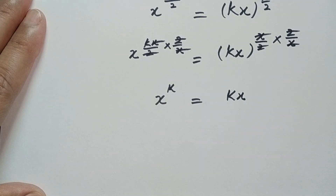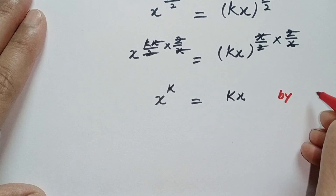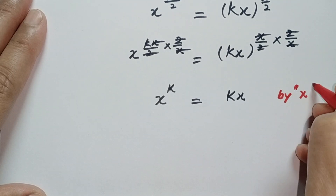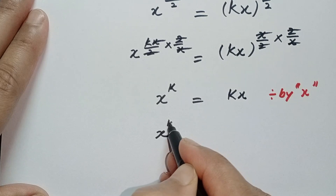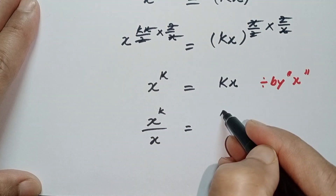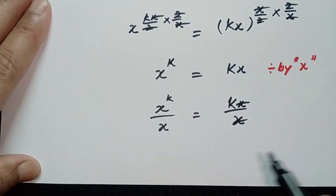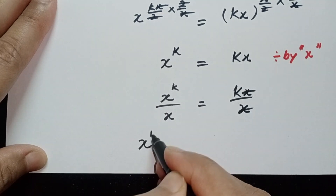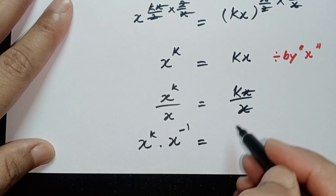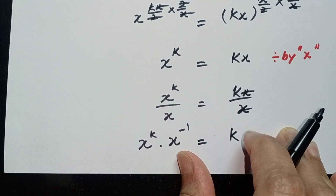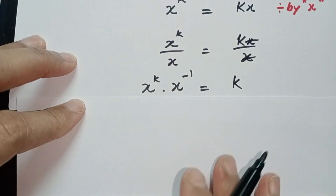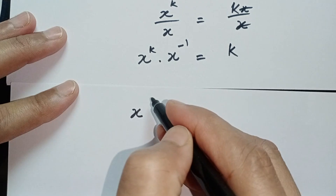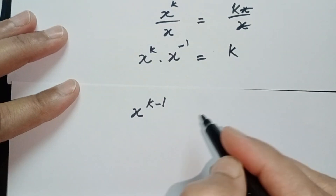By dividing both sides of this equation by x, we get: x to the power k over x is equal to kx over x. Here, x cancels with x on the right, and on the left we get x to the power k times x minus 1, giving us x to the power k minus 1 is equal to k.